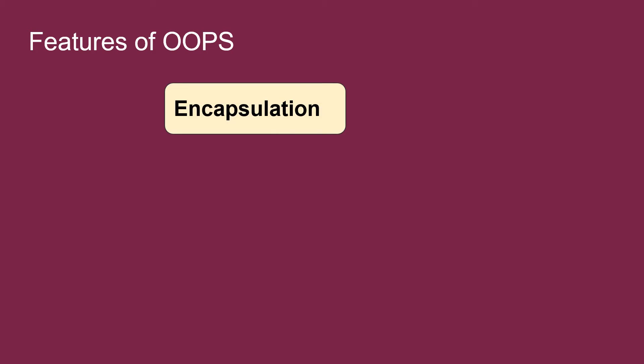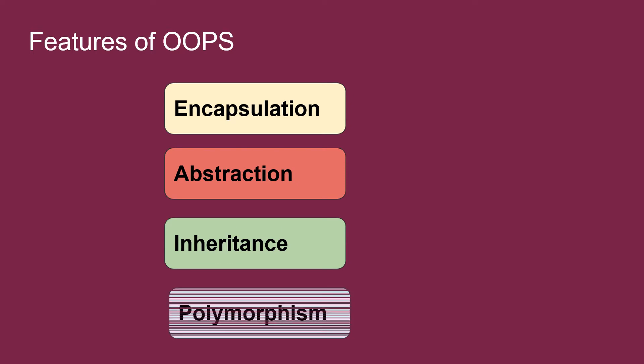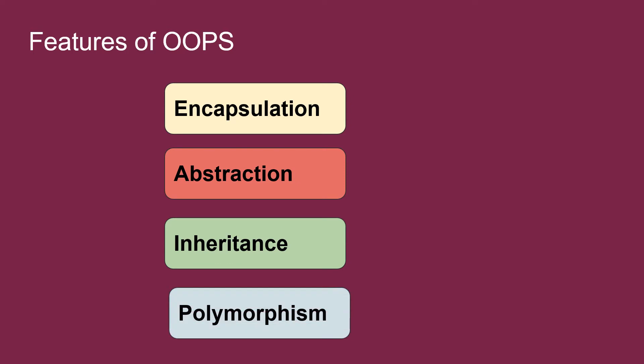First, Encapsulation. Second, Abstraction. Third, Inheritance. And fourth is Polymorphism. Let us discuss all these features one by one in detail.